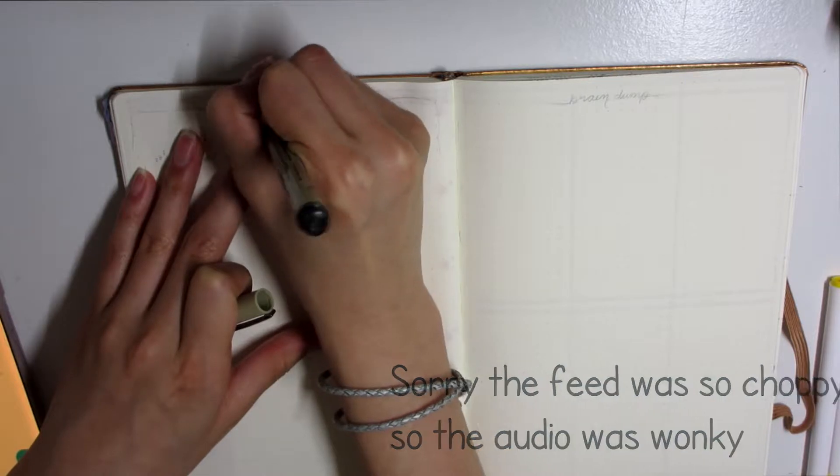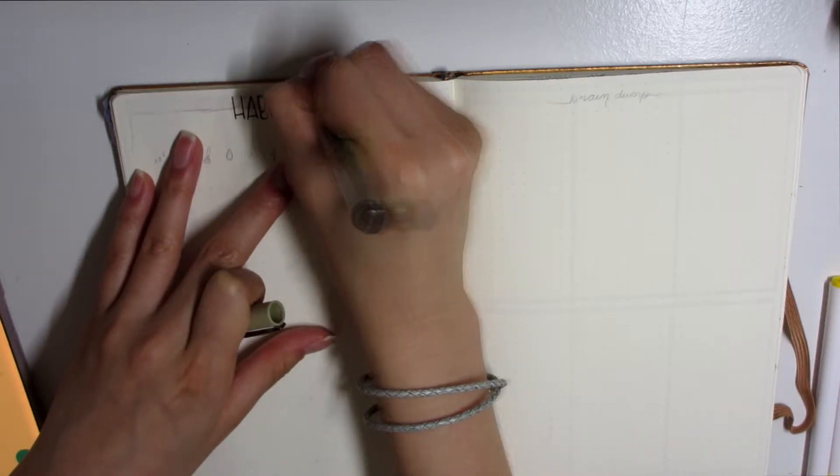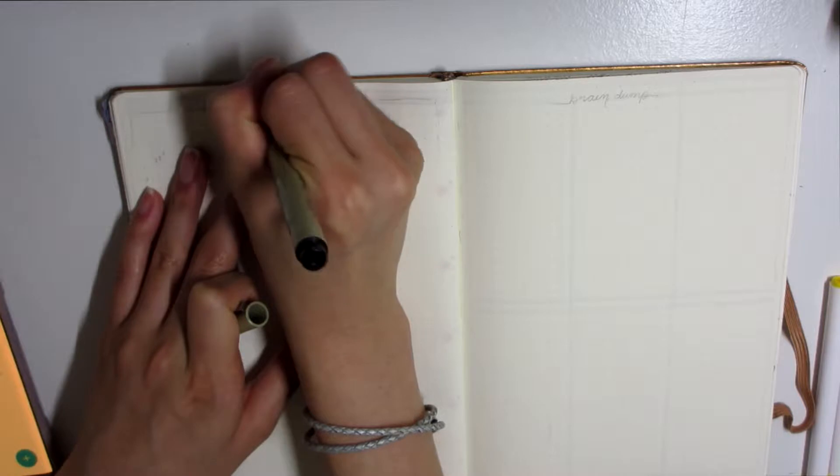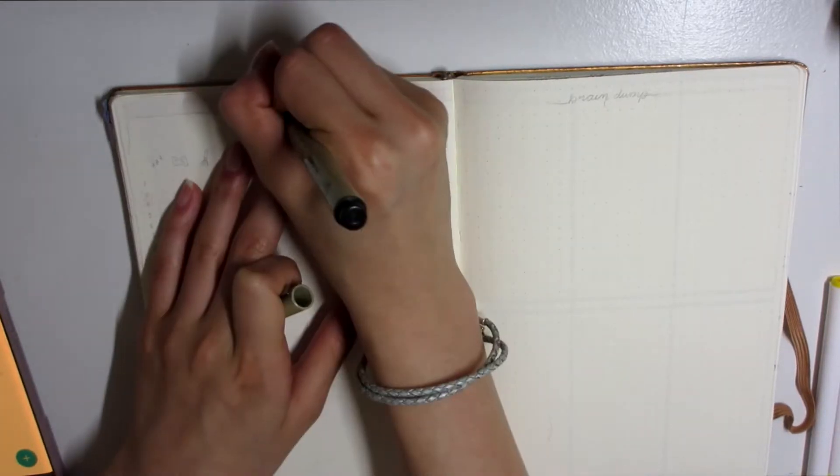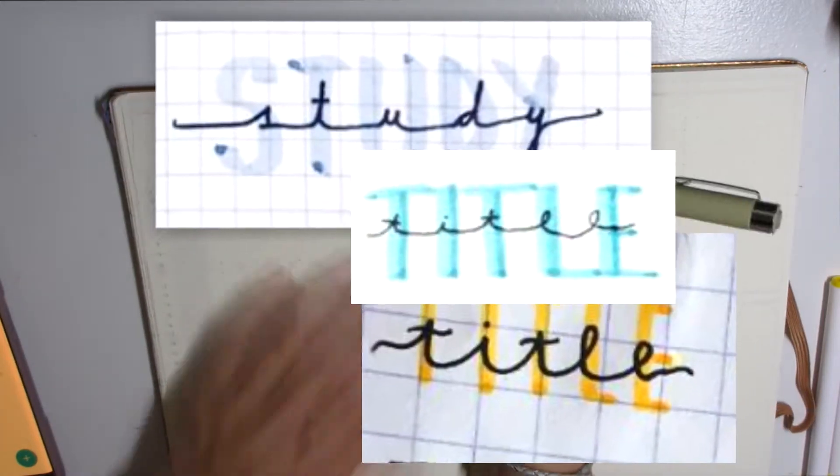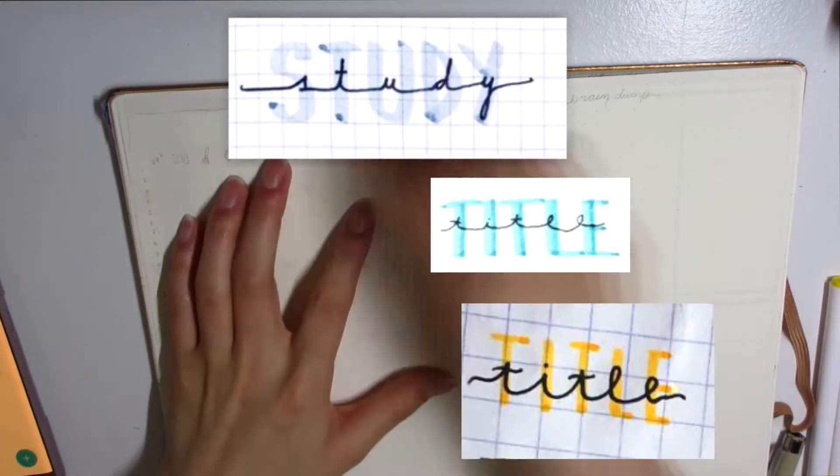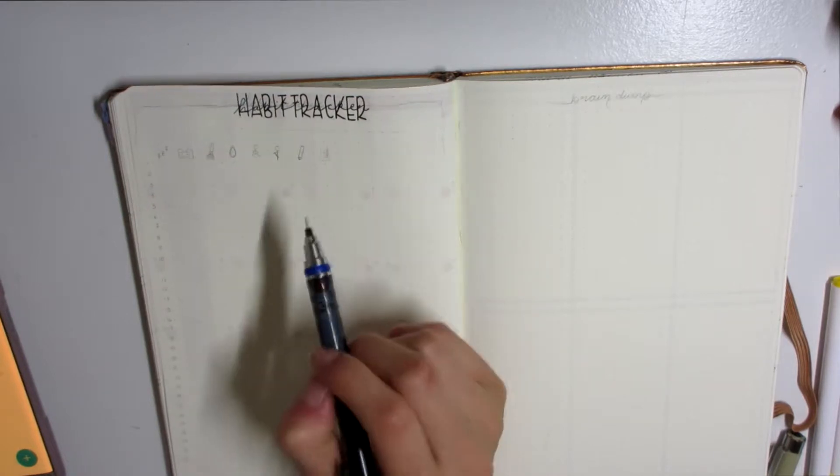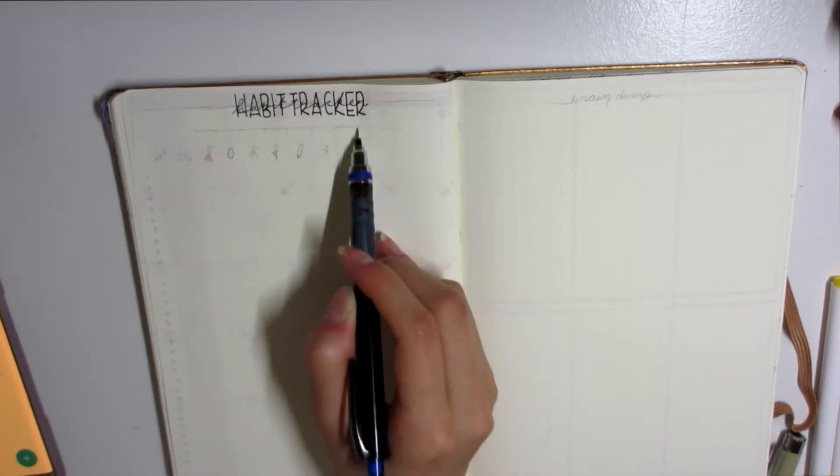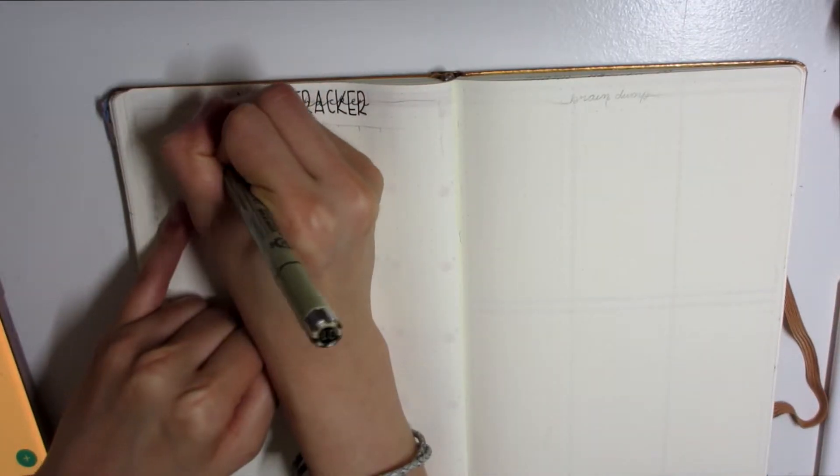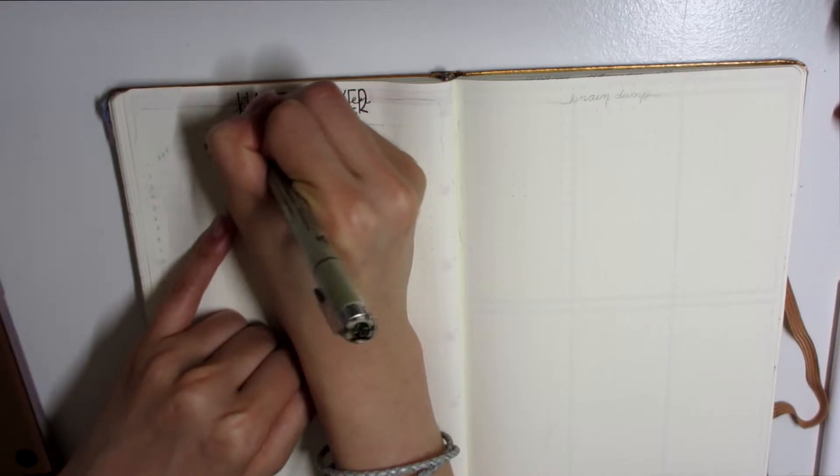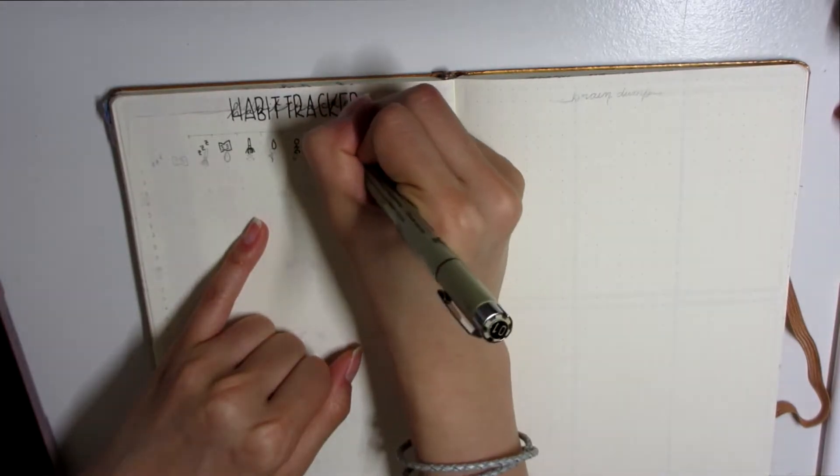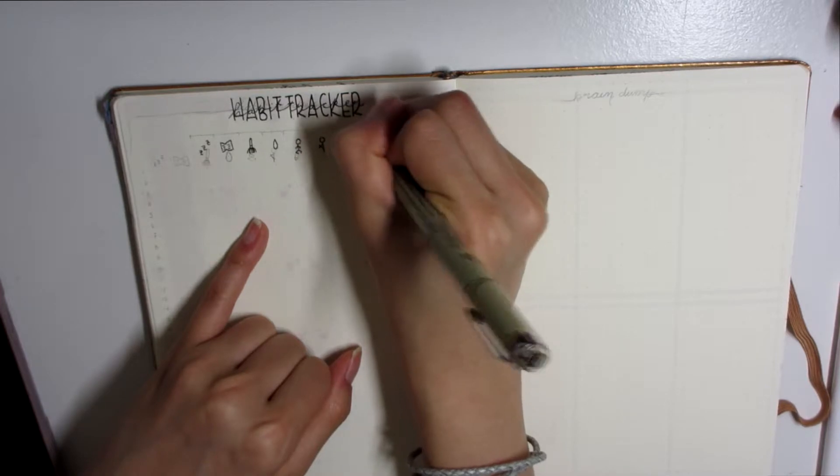Next up I have the habit tracker. The titles for most of these pages and spreads are based off of the cover page - capital lettering with cursive lettering in the middle. I'm using my fingers to count spaces because when I sketched it out with my pencil, I didn't realize how far shifted to the left it was, so I wanted to shift it to the center.